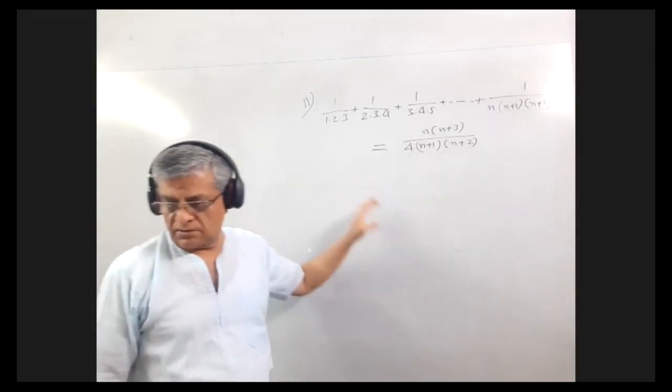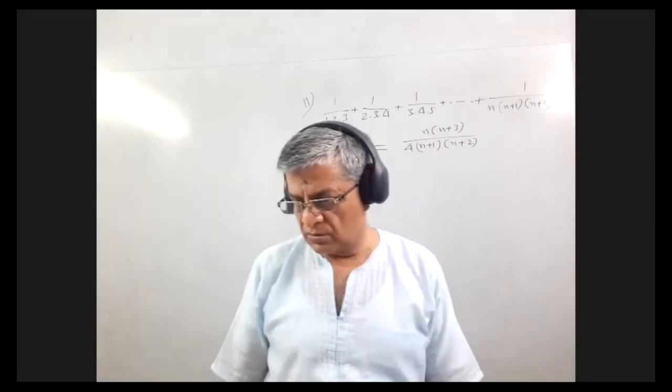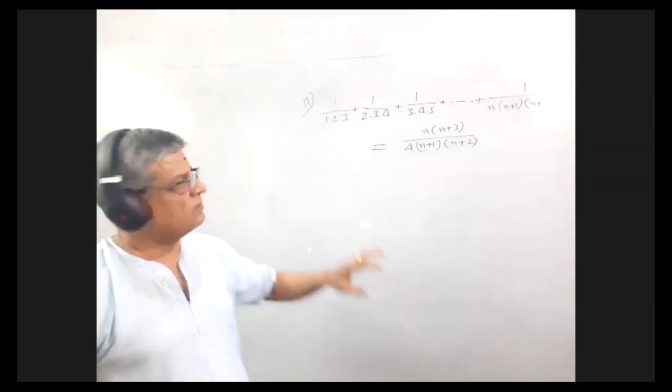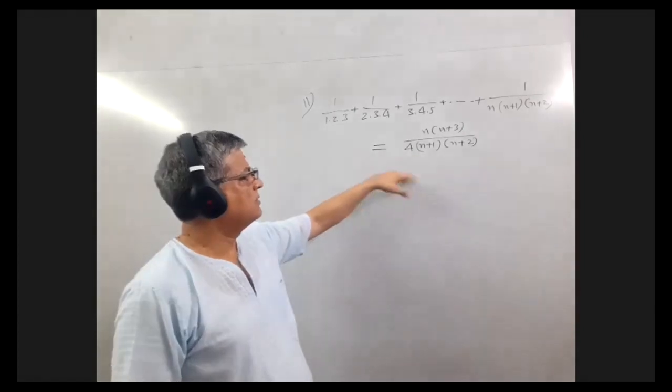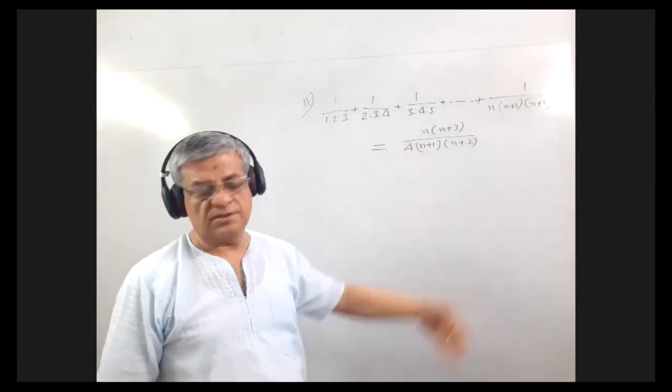This is the 11th question, right? So this we shall be proving here. So this is what is given, as for n is equal to k.